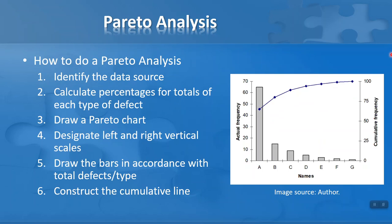So how do we do a Pareto analysis and create a Pareto chart? First of all, we've got to identify the data source — we might use things like check sheets to record data, errors, or faults in a process. Then we work out the percentage totals for each type of defect, and we can use these totals to draw a Pareto chart. A Pareto chart usually shows a cumulative line, like the one we see here on the right hand side — that's the line going across the top that I'm pointing at now, and it accumulates up to 100%. We designate the left and the right vertical scales: on the left we have the actual frequency of defects, and on the right hand side we go from zero up to 100%. We can see A, B, C, D and so on — these are the names of the defects. Straight away I can see defect A has the highest value and quite a high percentage, and it drops off. This is a typical Pareto type curve. And finally, we construct the cumulative line.